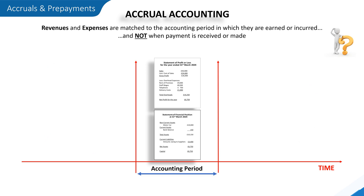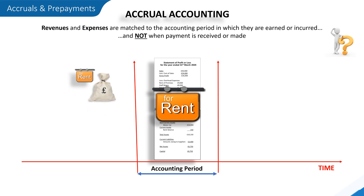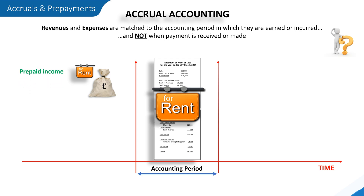For example, to raise its revenue a business may own some empty property that it decides to rent out. When a business rents property it will more than likely ask rent to be paid several months in advance. Any income received in advance of an accounting period is an example of prepaid income, and prepaid income appears as a liability on the statement of financial position, as it relates to income for goods and services that it has not yet delivered.